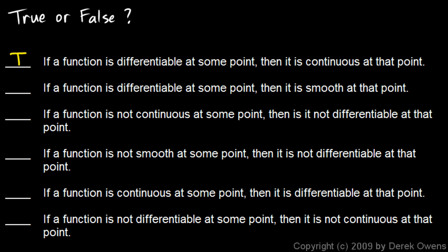Third: if a function is not continuous at some point, then it is not differentiable at that point. That's also true — if it's not continuous, you can't calculate the slope at that point. Fourth: if a function is not smooth at some point, then it is not differentiable at that point. That is also true.